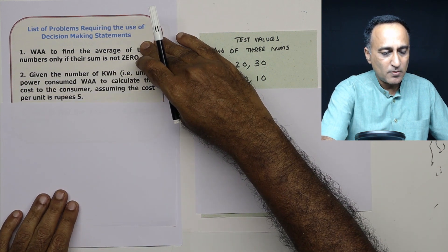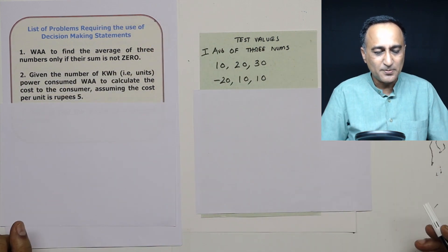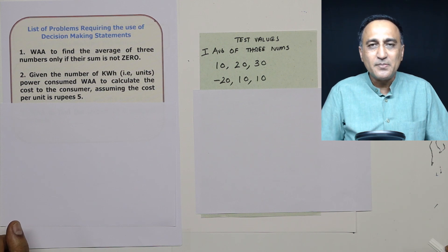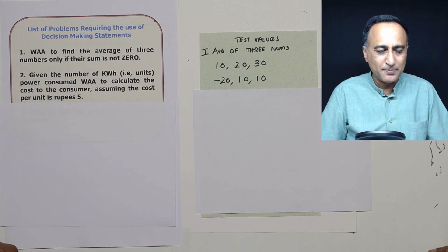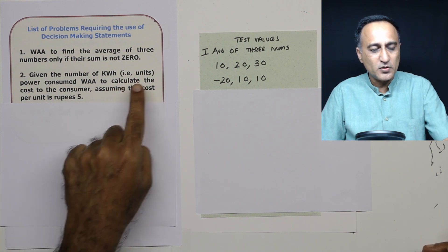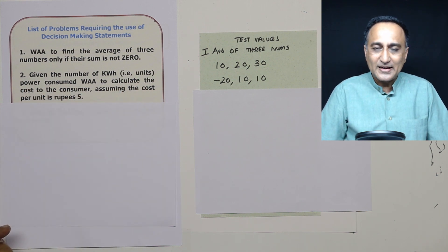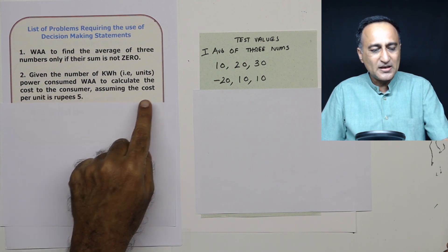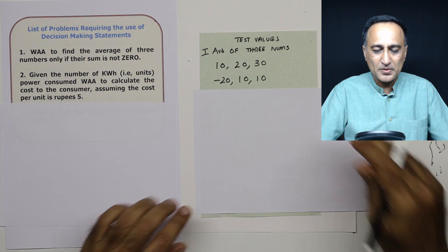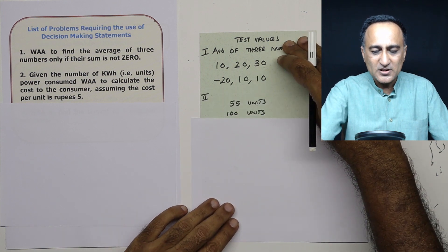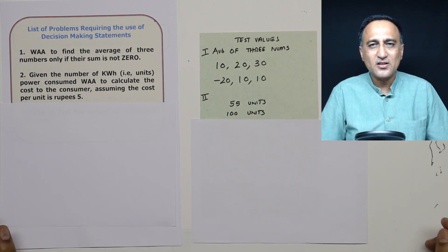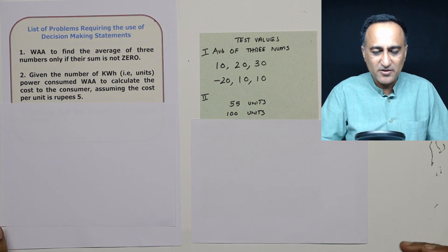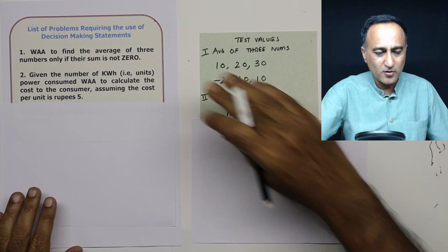Now let's go to the next problem. Next is again quite simple. All of you have electric meters in your house. Although the billing is a little more complicated, I have given a very simple example. So based on the kilowatt hours consumed, which is also commonly known as units of power consumed, write an algorithm to calculate the cost to the consumer, assuming the cost per unit is 5 rupees. So suppose your consumption is 55 units, the cost is going to be 55 into 5. If it is 100 units, it's going to be 100 into 5 or whatever it is.